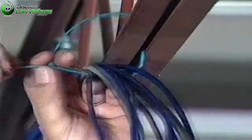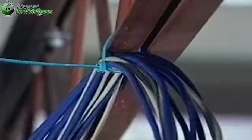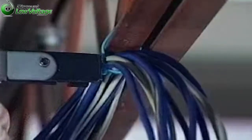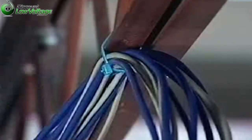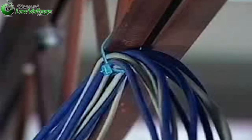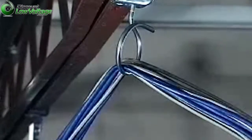The original CableCat J-Hook was created to solve problems with bundling high-performance cable such as kinking, overbending, and crimping caused by cable ties and narrow base bridle rings.